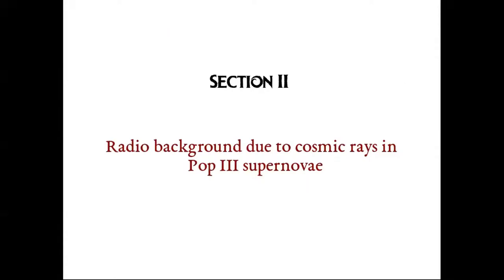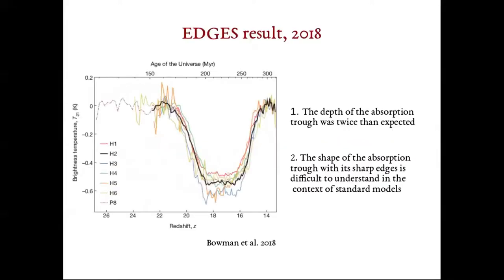Next, I studied the radio background produced by the cosmic rays accelerated in Population III supernovae. While we were working on the cosmic ray heating problem, EDGES reported the first detection of 21 cm radiation from the beginning of epoch of reionization. The absorption trough was centered at 78 MHz, that is, at redshift of 17, and the best-fitted profile had an amplitude of 0.5 Kelvin, which is almost twice the expected depth from the theoretical models. The shape of the absorption trough with its sharp edges was also difficult to understand in the context of the standard models.